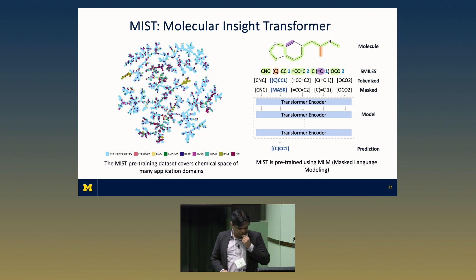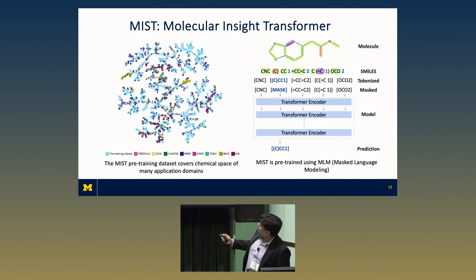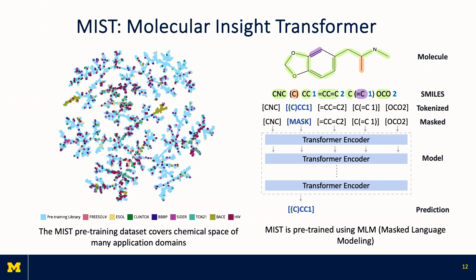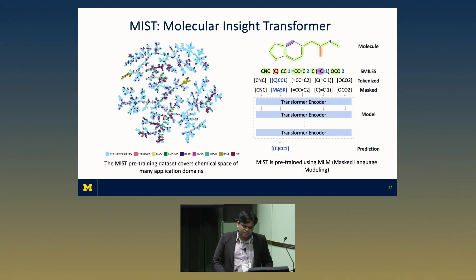Next I'll walk you through MIST — the Molecular Insight Transformer. The idea is we have SMILES, tokenize them, mask, and do the same masked language modeling. We've leveraged a lot of the capabilities that Arvind has built. The pre-training library is the chemical space that we spawn, which encompasses a lot of the tasks and datasets in MoleculeNet put together by Bharat. We believe the chemical space we have here would be very representative for the problem space that we're working on.